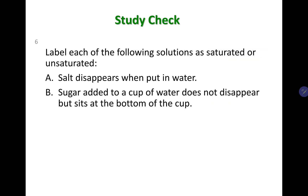Study check: label each of the following as saturated or unsaturated. A — salt disappears when put in water. If salt disappears, you can add more without difficulty, which means it is an unsaturated solution. B — sugar added to a cup of water does not disappear but sits at the bottom. If sugar is not going into water but sitting at the bottom, that means the solution is already saturated — whatever you add goes to the bottom.